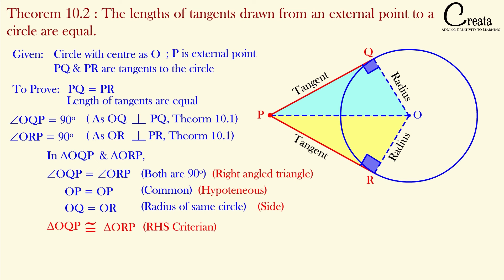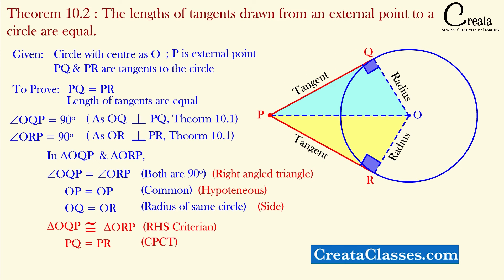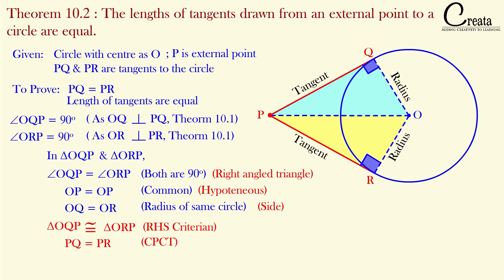Once we have both triangles as congruent, we can easily say by CPCT all corresponding sides will be equal. The only remaining side is PQ and PR. So we can conclude that PQ is equal to PR by CPCT — the Corresponding Parts of Congruent Triangles. PQ equals PR, which is what we had to prove: both tangents from the external point are equal in length. That is the proof of this theorem.